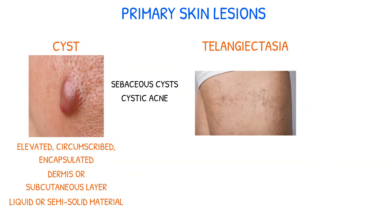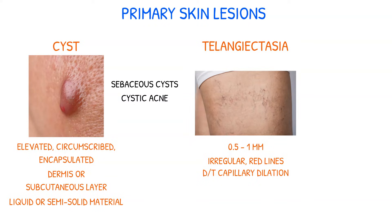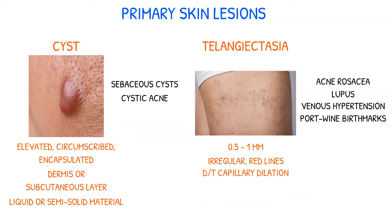Telangiectasia are fine, around 0.5 to 1 millimeter, irregular red lines produced by capillary dilation. They can be associated with acne rosacea, lupus, venous hypertension, or developmental abnormalities such as port wine birthmarks. In some cases they may cause discomfort or itching, but in most cases it's a cosmetic concern only.